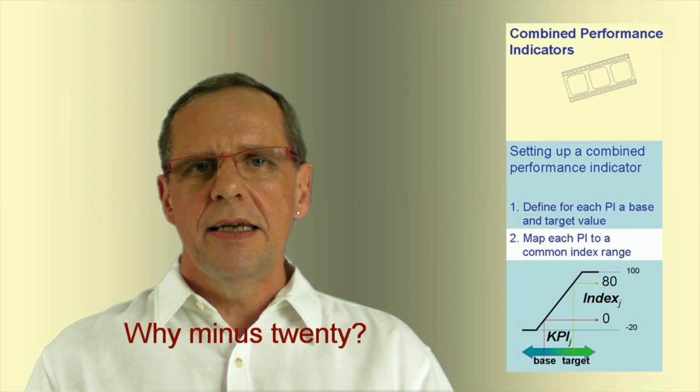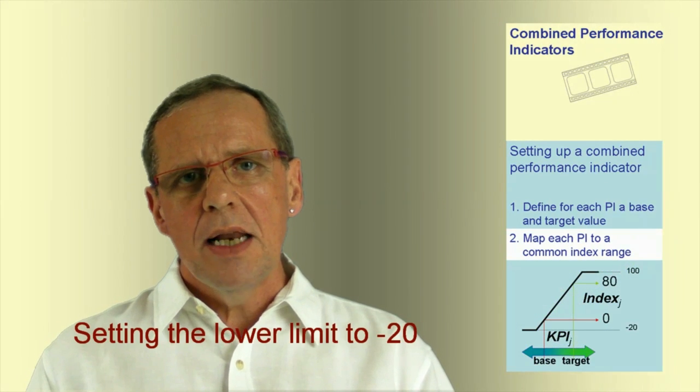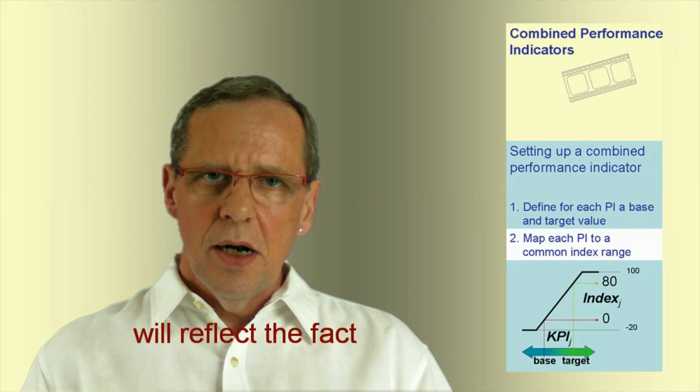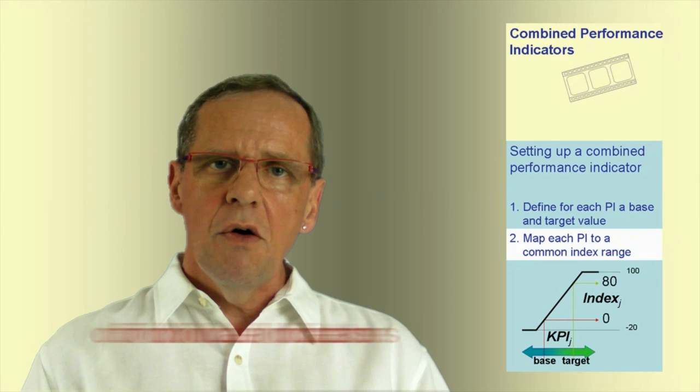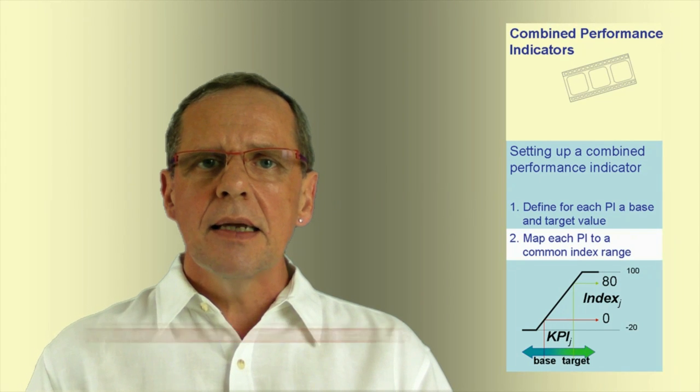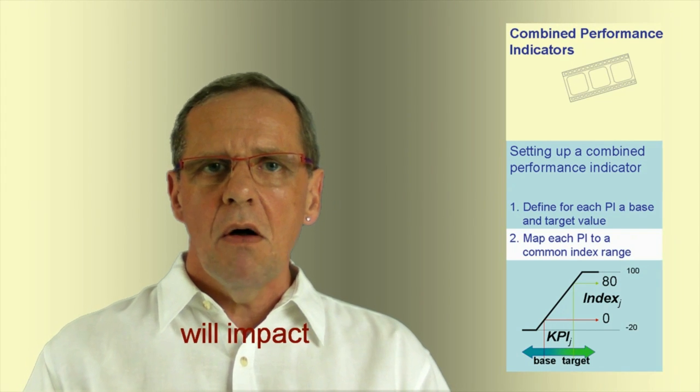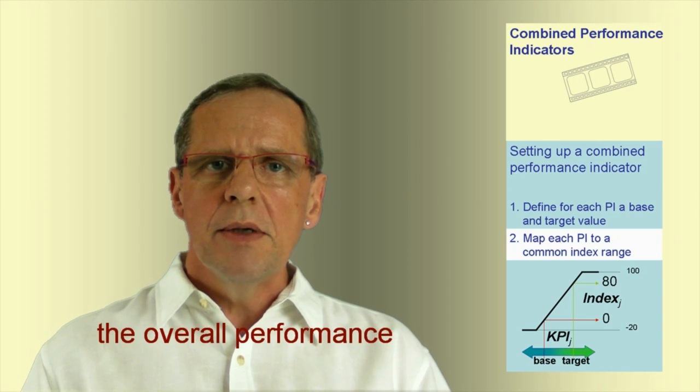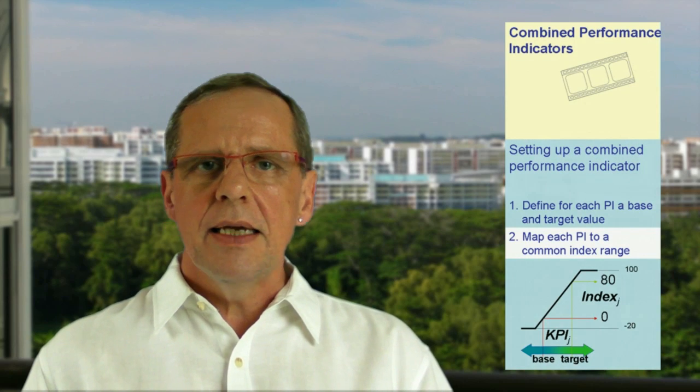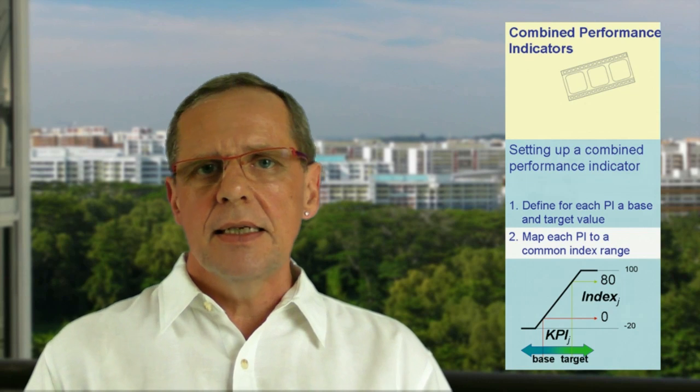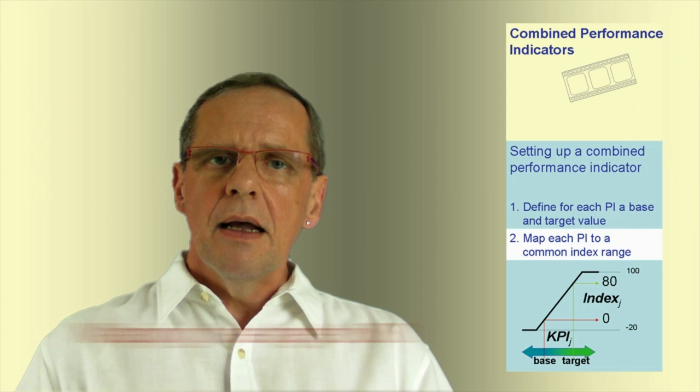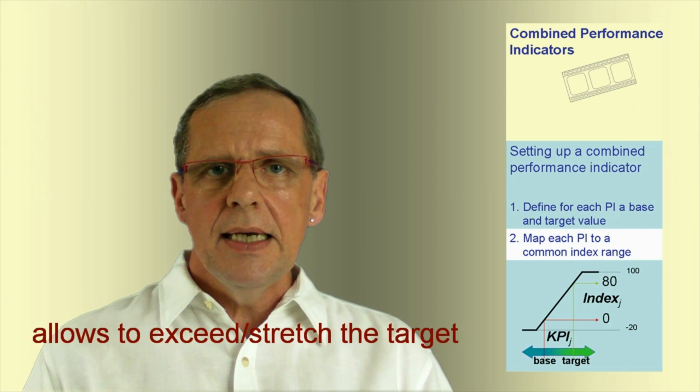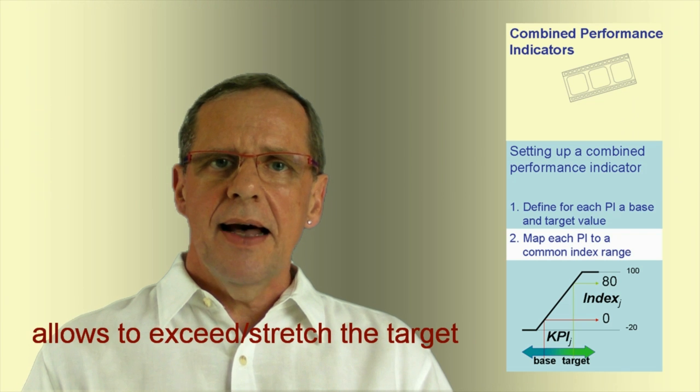Why minus 20? Setting the lower limit to minus 20 will reflect the fact that missing the base value of individual indicators will have an impact on the overall performance even if all other indicators are in the targeted range. Mapping the target to 80 allows to exceed or stretch the target.